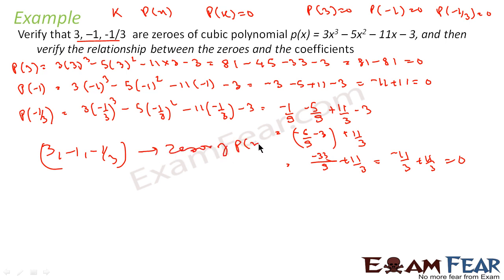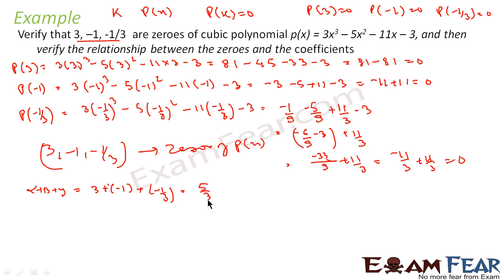Now since these are zeros of p(x), let's verify the formulas. Alpha + beta + gamma = 3 + (−1) + (−1/3) = 2 − 1/3 = 5/3. And −b/a = −(−5)/3 = 5/3. So both are equal — the formula is verified for the sum of zeros.